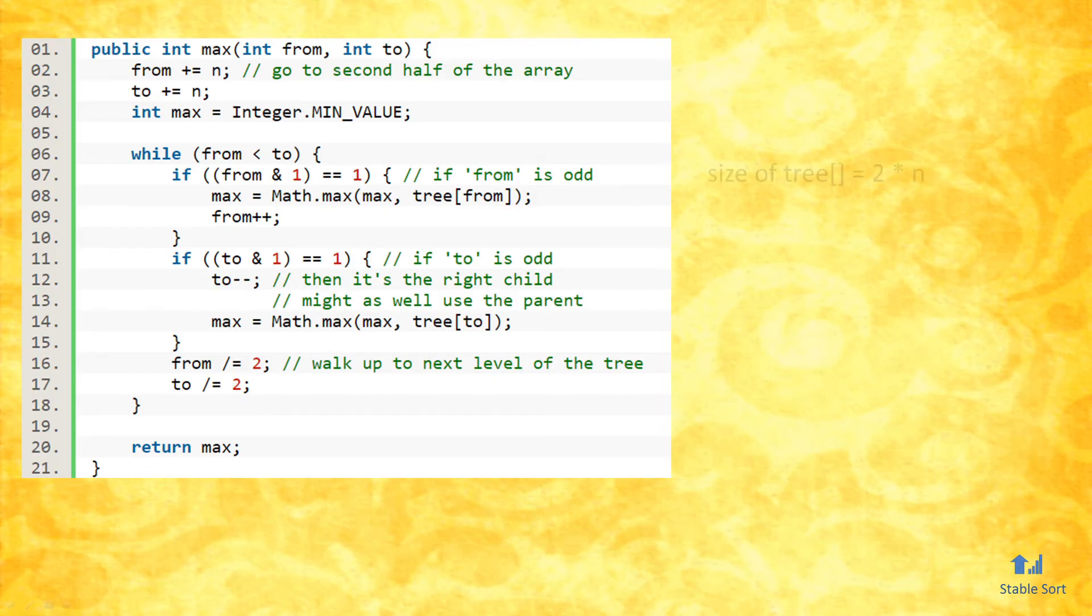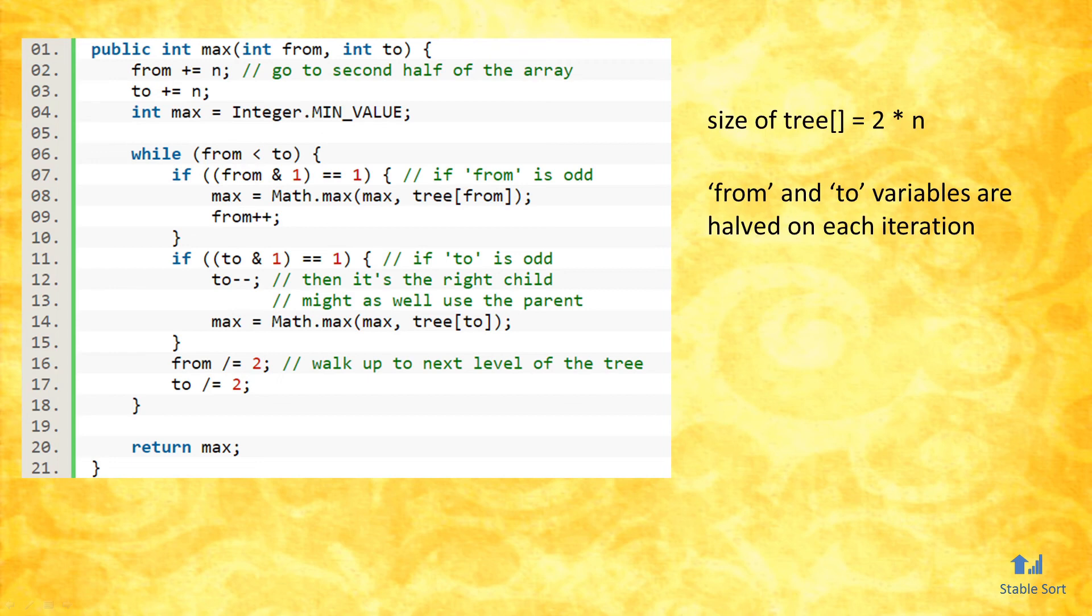Given that the length of the tree array is always twice the size of the input array, which is a constant multiplier, and that on each iteration of the loop the from and to variables are halved, the loop iterates at most log base 2 of 2 multiplied by n, which is an order log n running time complexity. Another way of saying this is, since the algorithm works up the tree and the height of the tree is equal to log n, its running time is order log n.